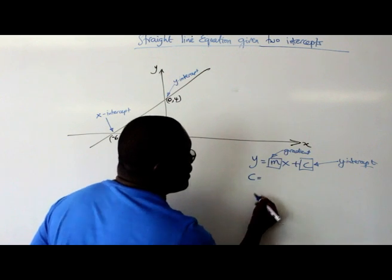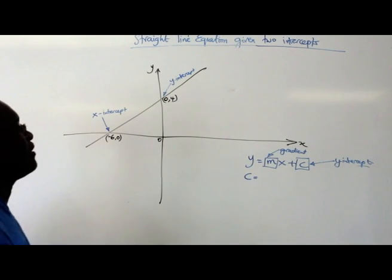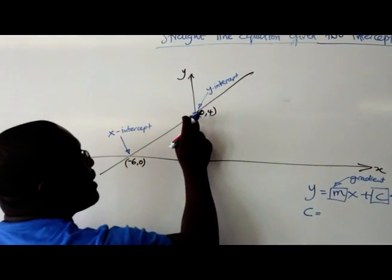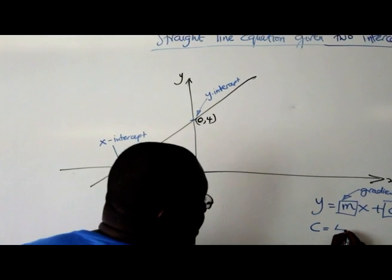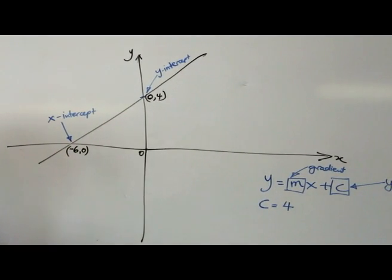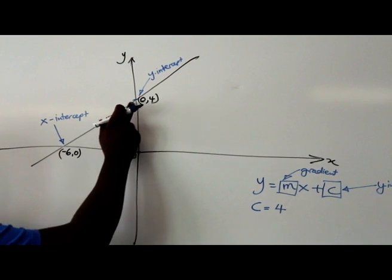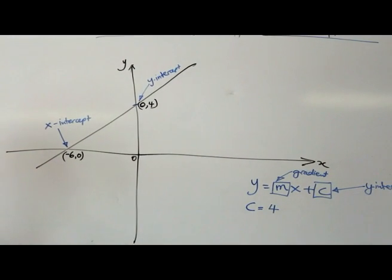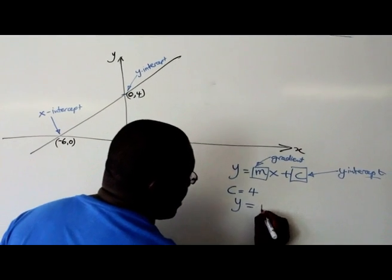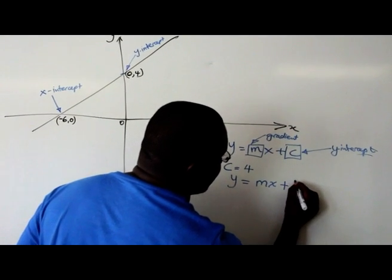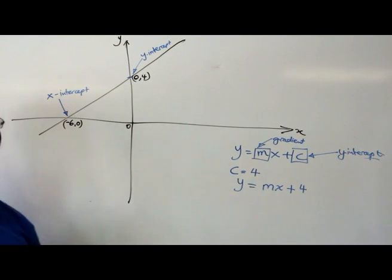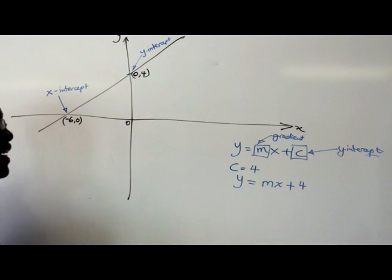c is pretty easy because we know that the graph crosses here and the value of y at this point is 4. So our c is going to be equal to 4, straight from the graph. It's just a matter of you taking the value straight from there. So once you know the value of c, your equation looks like this now: y equals mx plus 4, because the same 4 is the point at which the graph crosses the y-axis.